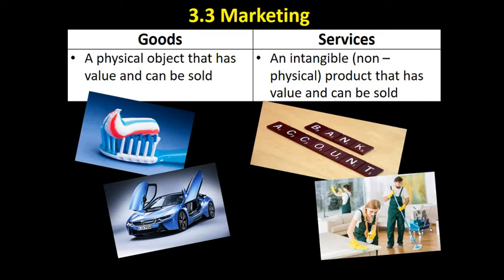A service is something that you can't touch. For example, you buy the car — that's the physical good — but to drive it you need an insurance policy. You can't really touch an insurance policy; it doesn't exist tangibly in reality. A bank account is another example. Cleaning services and haircuts are all examples of services.